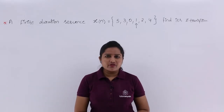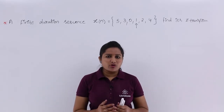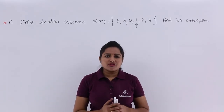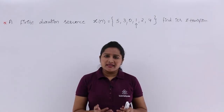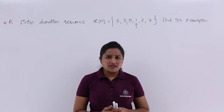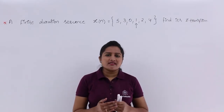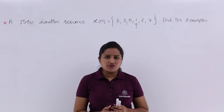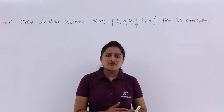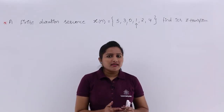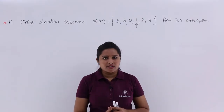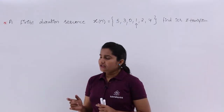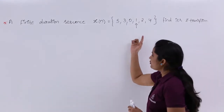In this video we are going to deal with a problem related to Z-transform. In this problem they have given a sequence and indicated the term X of 0. In the previous problem they did not give any X of 0 arrow mark indication, but here they have given an arrow mark.